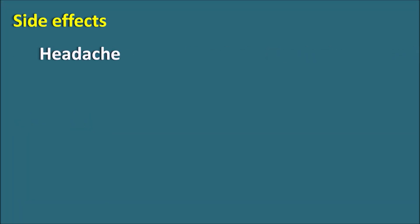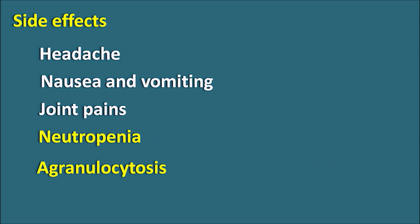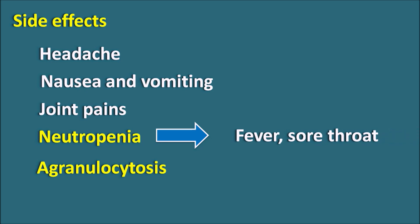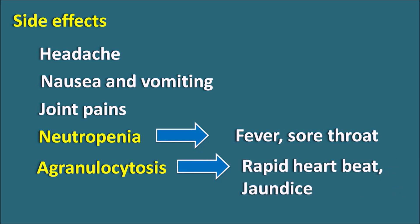What are the side effects? These antithyroid agents can produce common side effects like headache, nausea, vomiting, and joint pains. Apart from these, they produce two important side effects: neutropenia and agranulocytosis. Neutropenia — a decrease in neutrophil count — can cause fever, sore throat, and chills. Agranulocytosis can produce rapid heartbeat and jaundice. Whenever these two side effects are observed, antithyroid agents should be given carefully.